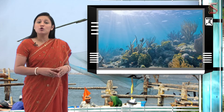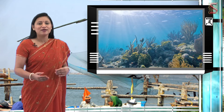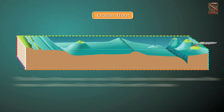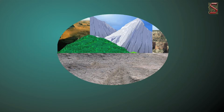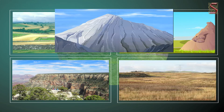Students, have you ever wondered what lies beneath the surface of the water? What do you think the bottom surface of the ocean looks like? The floor of the ocean is mostly like the surface of the earth. It is not a flat surface but consists of various landforms like that of the earth's surface. It also contains various landforms like hills, plateaus, plains, mountains, trenches, etc.